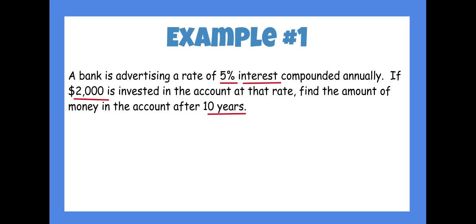First, underline the key information. Interest is the keyword to know that we're going to be using the addition formula. 5% is needed, the $2,000, and the 10 years.